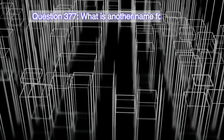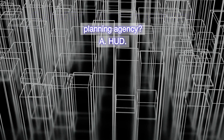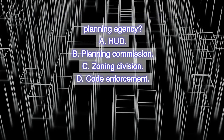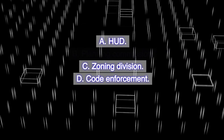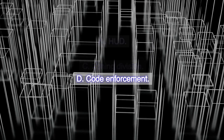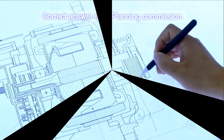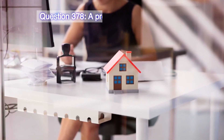Question 377. What is another name for a town's planning agency? A. HUD. B. Planning commission. C. Zoning division. D. Code enforcement. Correct answer is B. Planning commission.